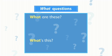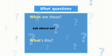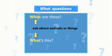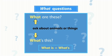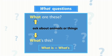We use the question word 'what' to ask about animals or things. We use 'is' to ask about one animal or thing. We use 'are' to ask about more than one animal or thing. We often use 'what is' in formal written English and 'what's' in spoken English.